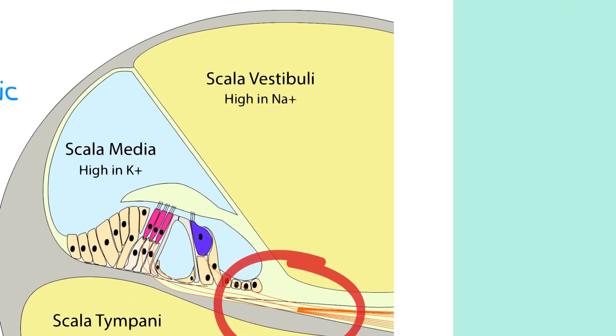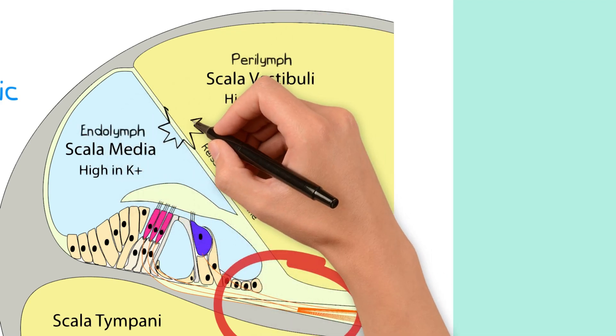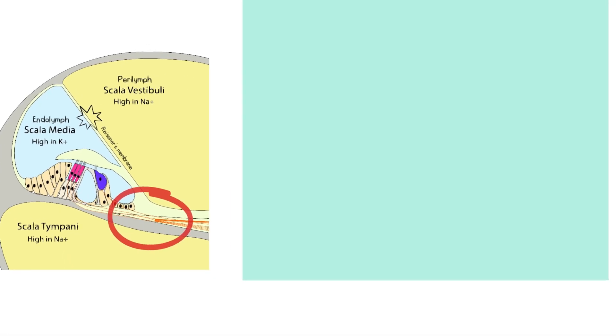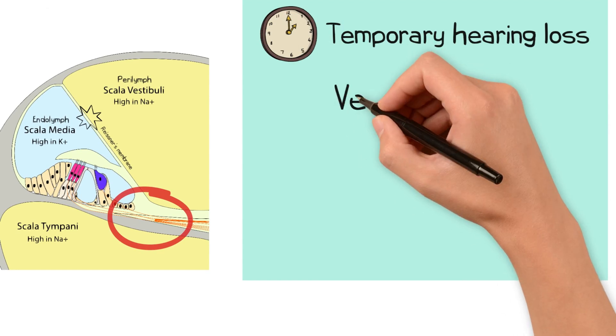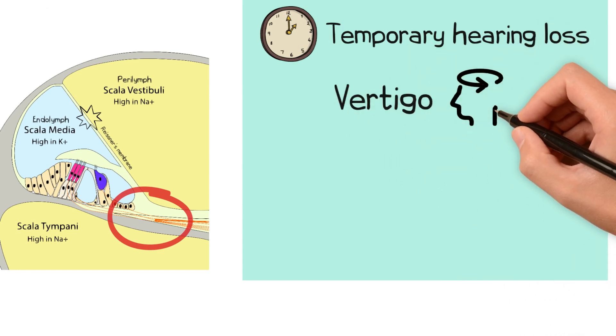In some cases, the endolymphatic pressure can increase and cause a breach in Reissner's membrane, which separates the perilymph from the endolymph. The resulting mix in perilymph and endolymph causes a temporary hearing loss and vertigo, until the membrane is repaired and the normal composition of the endolymph has been restored. This can be between 20 minutes to 4 hours, but usually not longer than a day.